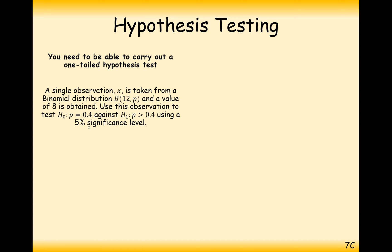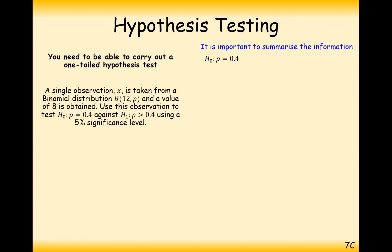If the probability of scoring 8 or more is more than 5%, the data is within the expected range of variation for 12 observations. But if that probability is less than 5%, we start to get suspicious. Let's give it context: 12 penalties taken by a player who usually scores 40%, and after training they score 8.